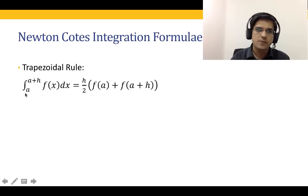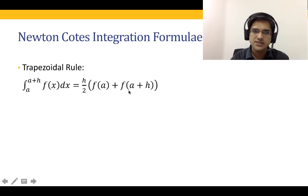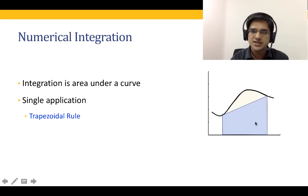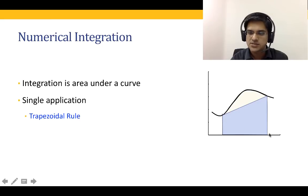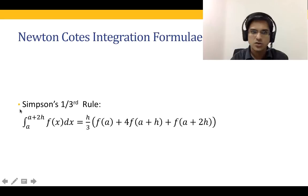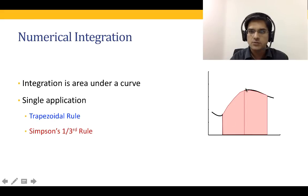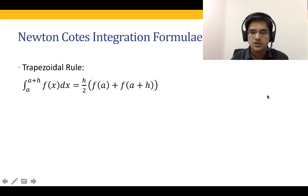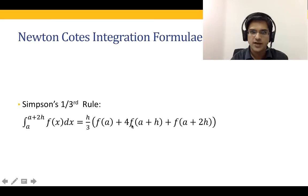The trapezoidal rule integral from a to a+h of f(x) dx equals h/2 times [f(a) + f(a+h)], which is the area under a trapezoid: the sum of the two heights multiplied by the base, divided by two. Simpson's one-third rule is given by h/3 multiplied by [f(a) + 4·f(a+h) + f(a+2h)].